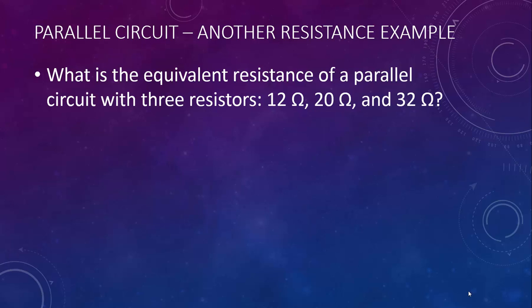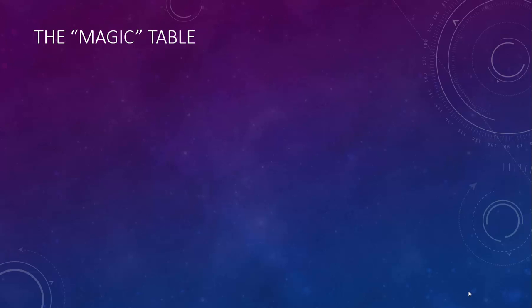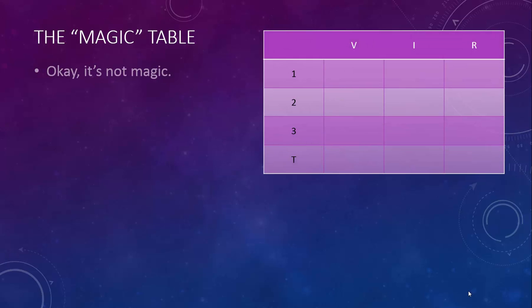Now that we know the equations for series and parallel circuits, we can use them to calculate the voltage, current, and resistance of circuits and their components. To help us do this, we're going to use the magic table. Okay, it's not magic obviously, but it's incredibly helpful. I'm going to explain how to use it — I think you'll find it's a great way to organize your information and figure out which equations to use.